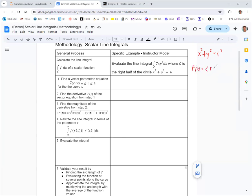So for our specific example, the radius is 2, and so it would be 2 cosine t, 2 sine t. Once you have that parameterization, in step two, you want to take the derivative of that vector function and get r prime.